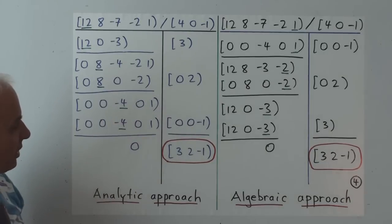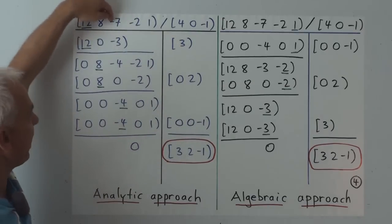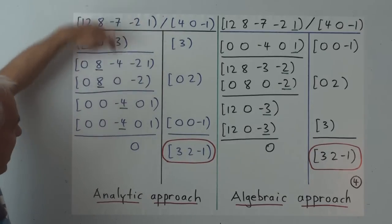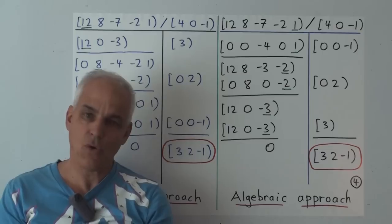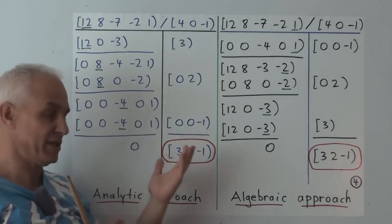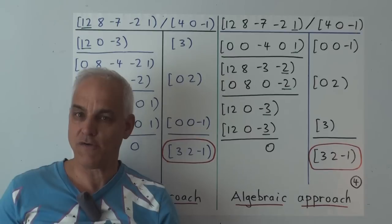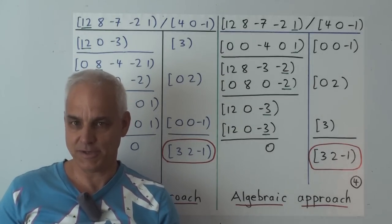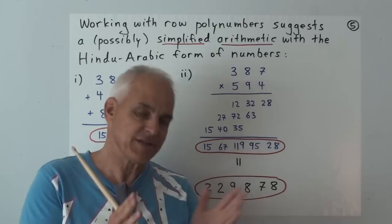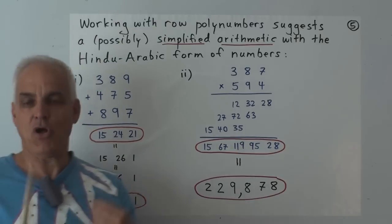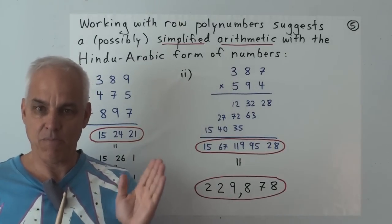The beauty when working with polynumbers is that all of the columns are essentially independent — there's no carrying or interplay between adjacent columns. Every column acts on its own. That actually suggests an interesting application to ordinary arithmetic, because this long division is a lot like ordinary long division for numbers. If the arithmetic for polynumbers is somehow easier, couldn't we apply that idea to ordinary arithmetic?